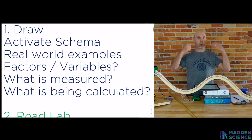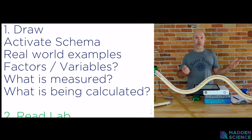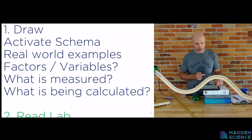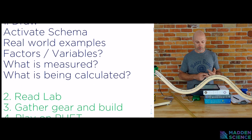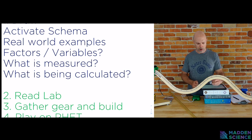So we're trying to activate the schema. Think about real world examples. Times that your potential energy changes, and times that your kinetic energy changes, or the factors and variables. Think about what's measured and calculated. To do that, we're going to want to pay close attention to the formulas. So potential energy mgh and kinetic energy one half mv squared.